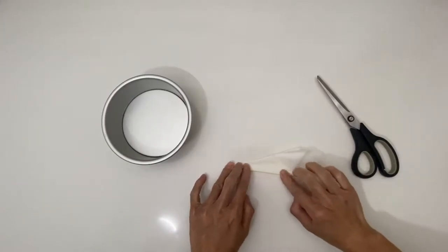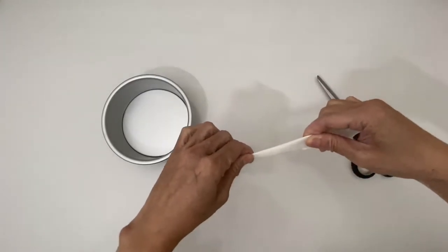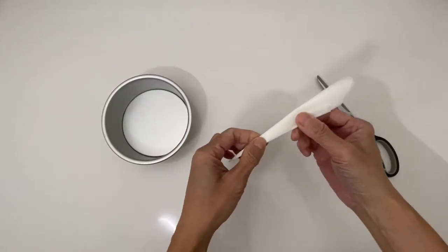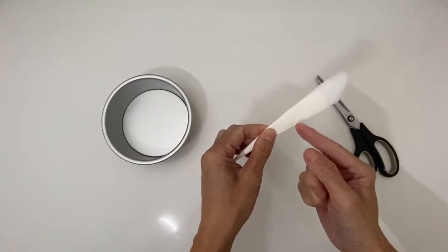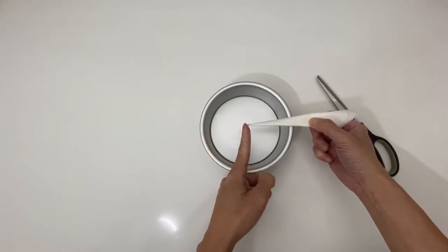Fold it one more time. You now have a very slim triangle. Now this is the edge of the paper. You need to be aware of it because you won't get a circle if you cut across this edge.